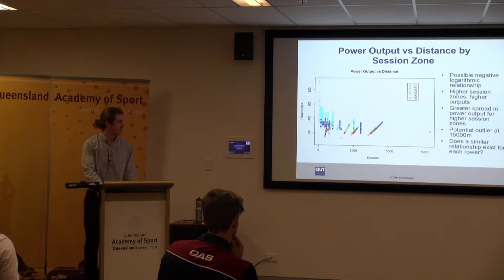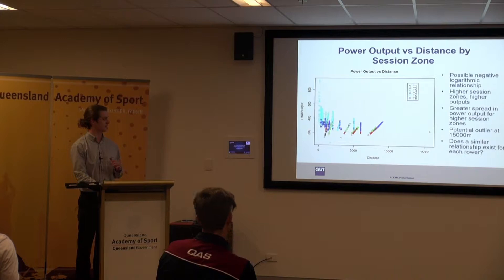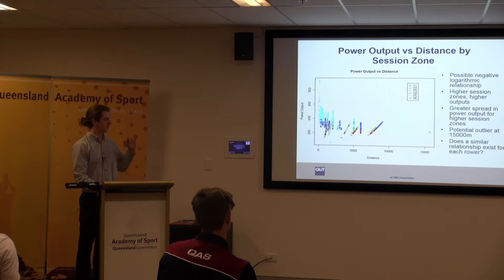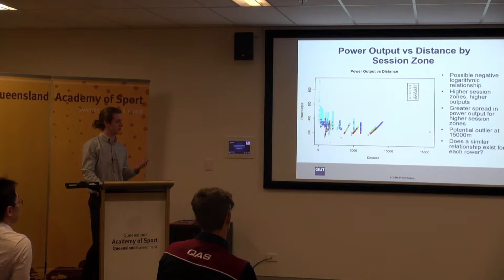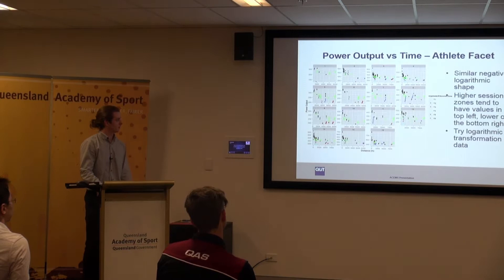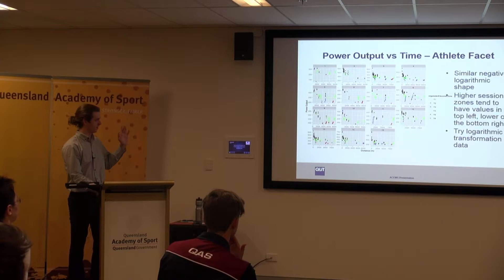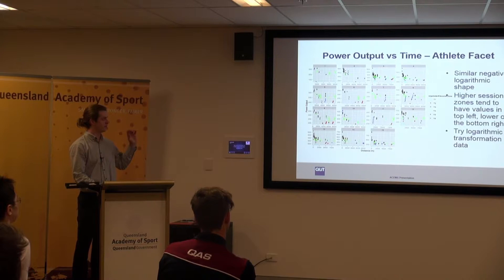The first thing I did was a scatter plot of power output against distance, coloured by session zone. We can see it's decreasing at a decreasing rate — it looks like a negative logarithmic relationship. High session zones tend to have high power outputs and a much greater spread, as opposed to lower session zones. I then plotted each athlete individually and got the same pattern across all 15 rowers: the negative logarithmic shape, with higher session zones having higher power output values.